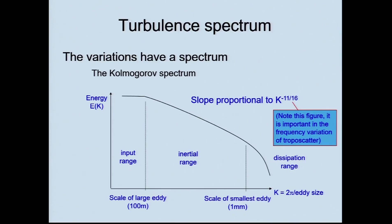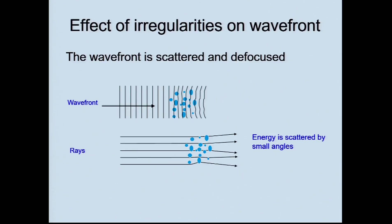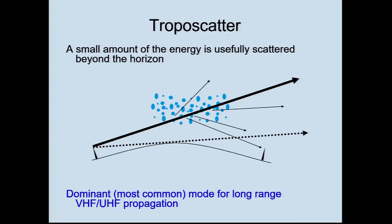Think of this as changes in refractive index in the air because of temperature and pressure — the wave front gets scattered by small angles and defocused. That means some of that energy is usefully scattered beyond the horizon. If your transmitter and receiver are both looking at the same bit of air where the signals are being scattered from, you'll get signals that go beyond the horizon. This is the concept of the common volume. A typical value on two metres is about minus 145 dB including antenna gain between transmitter and receiver.